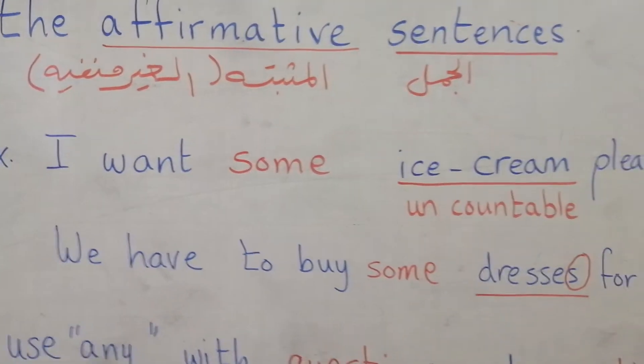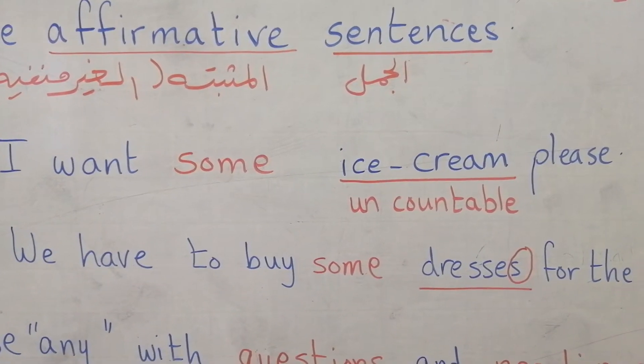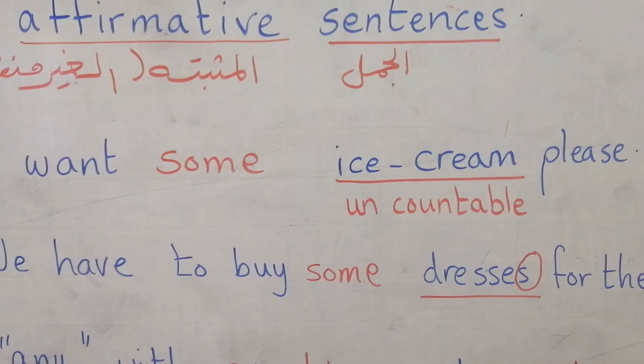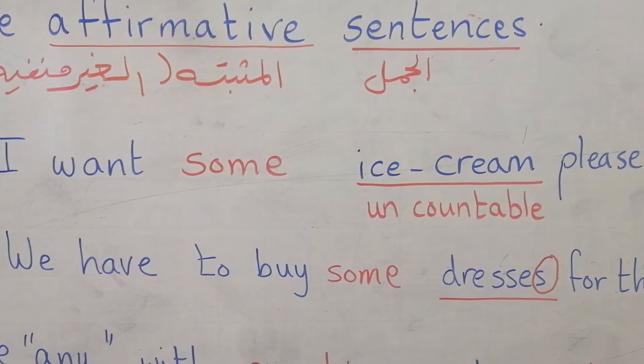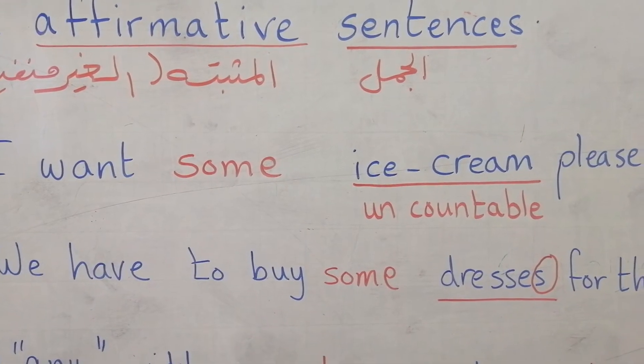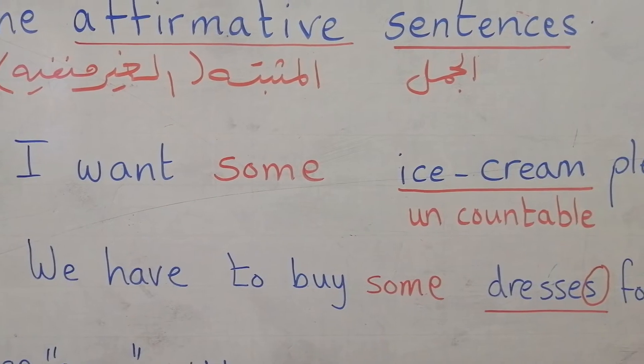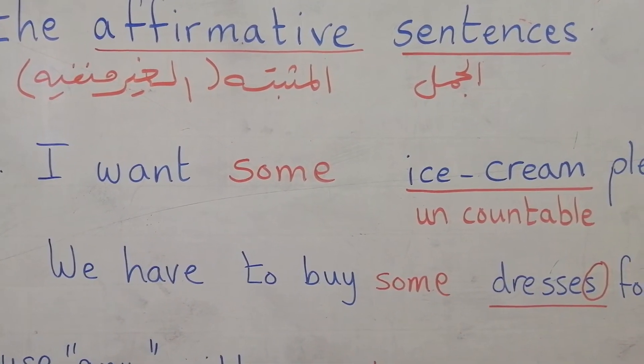Look at these two examples. I want some ice cream, please. Look at the noun ice cream. We can't count ice cream. It's an uncountable noun, so we have to put some here. And the sentence here is affirmative sentence, without not.